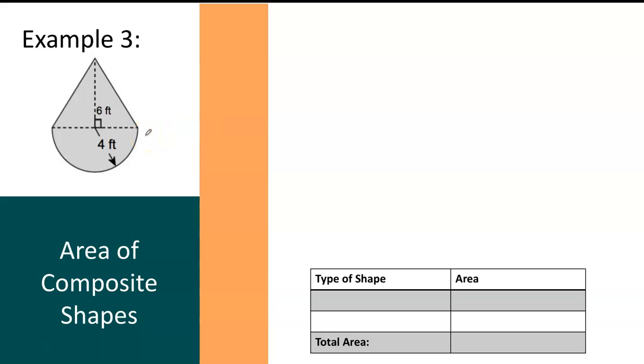This picture already kind of divides it for us with this dashed line. I can see that we have a triangle and we also have a half of a circle. So let's start by finding the area of the triangle.